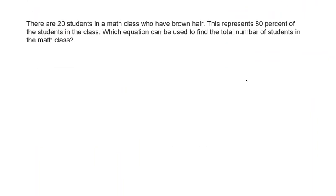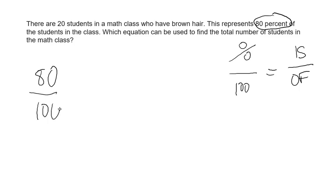Another example. So again, our formula is percent over 100 is equal to is over of. There are 20 students in a math class who have brown hair. This represents 80%, that tells us that it's 80 over 100 of the students in the class. What equation can be used to find the total number of students in the math class?